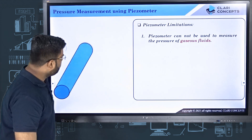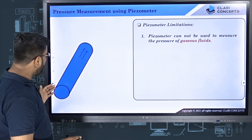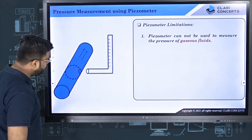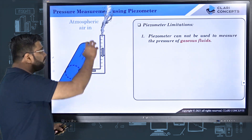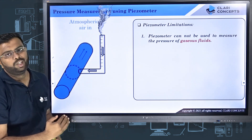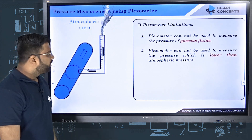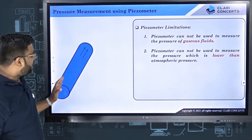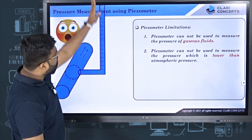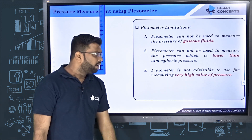Second limitation: if the fluid pressure in the pipe is below atmospheric pressure, inserting the piezometer will cause atmospheric air to start penetrating into the pipe rather than fluid flowing out, because the pipe pressure is lower than atmospheric. So piezometers cannot be used to measure pressures lower than atmospheric. Third limitation: if the pressure of the fluid in the pipe is very large, the tube would need to be extremely long, which is not practical. Therefore piezometers are not advisable for measuring very high pressures.